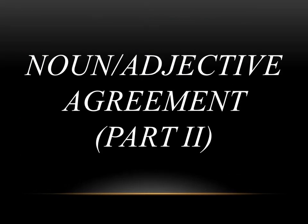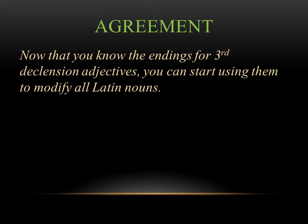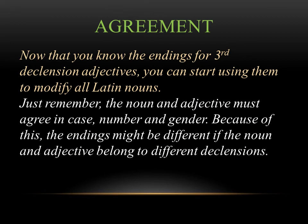The last piece of grammar to talk about in this chapter is noun-adjective agreement, which we've already seen earlier in the book. Now that you have the endings for third declension adjectives, you can start using them to modify all Latin nouns. In noun-adjective agreement, the noun and the adjective have to agree in case, number, and gender. Because of this, the endings might be slightly different if the noun and adjective belong to different declensions. It's really easy when the noun and adjective are both first and second declension, but now that you have third declension adjectives the endings might not match up. Remember, with agreement you're only talking about case, number, and gender — they don't have to agree in declension.